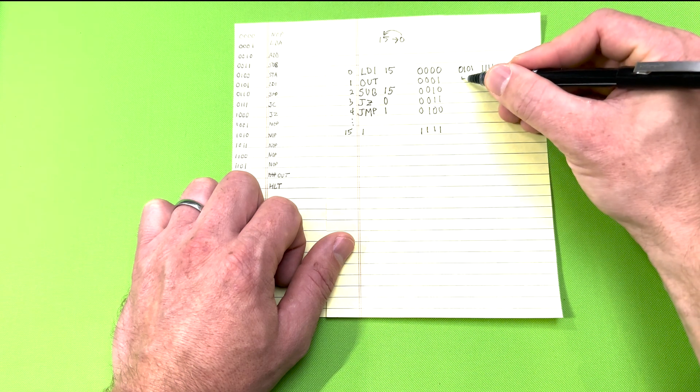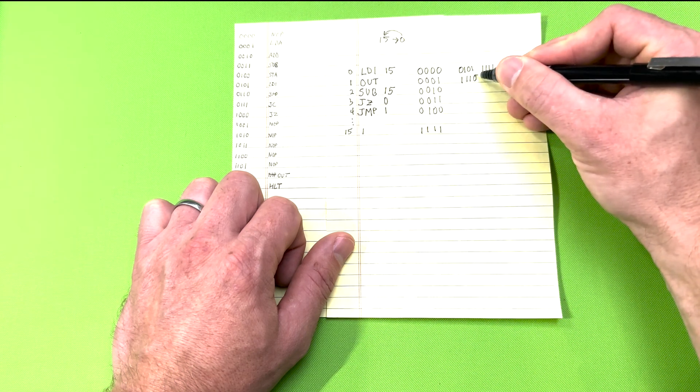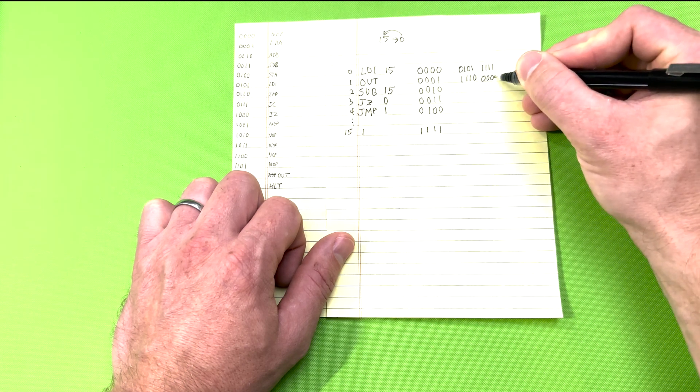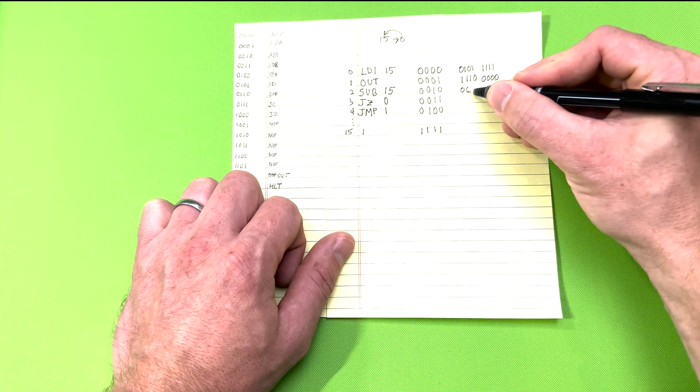The OUT instruction is 1, 1, 1, 0, and since the OUT instruction has no data, since it's outputting the value from register A, we can leave the last 4 bits as all zeros.